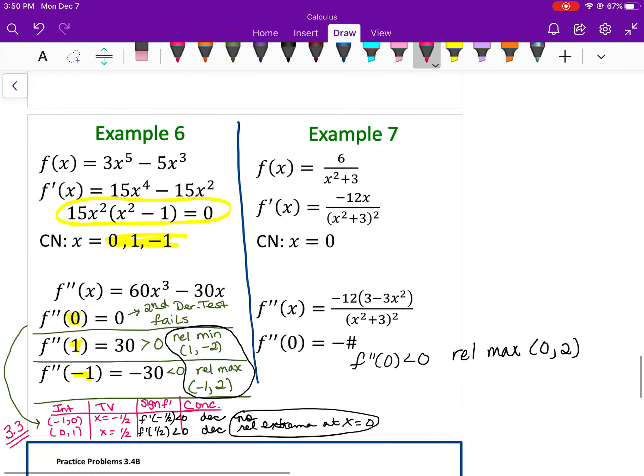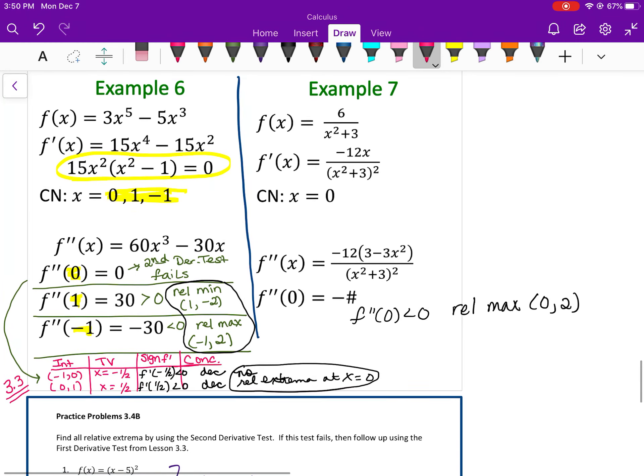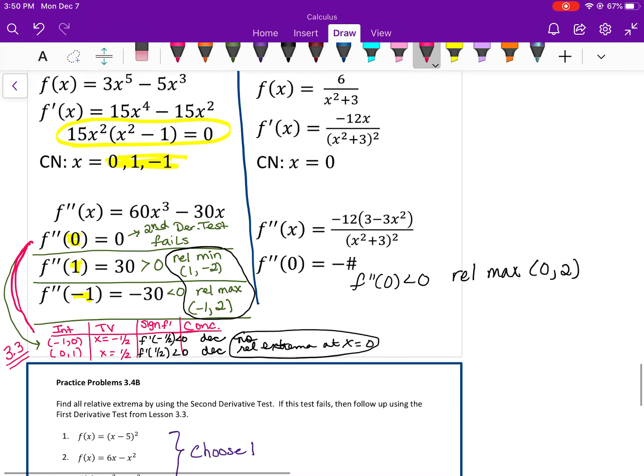For Examples 6 and 7, this is one that's in your cut-apart notebook, so we pasted it in. They found the critical numbers already and gave you the second derivative. We plug them in, so this right here is plugging in your second derivative. We got zero for zero, which means the second derivative test fails.